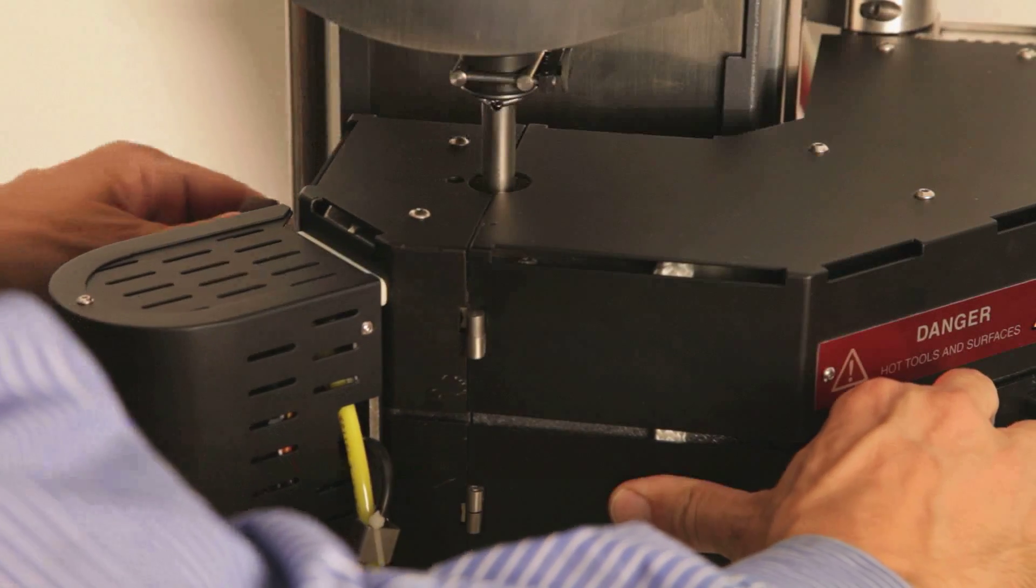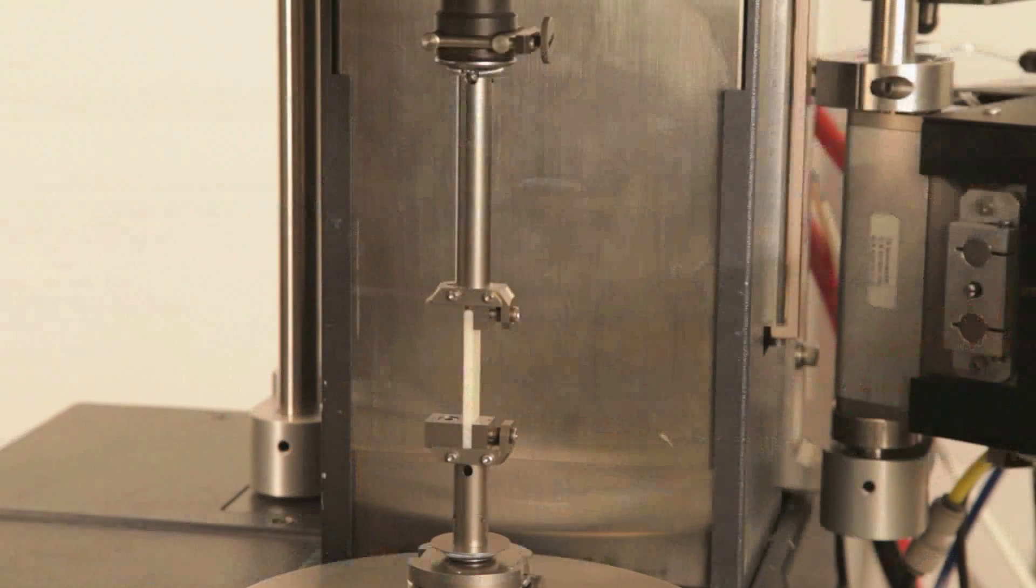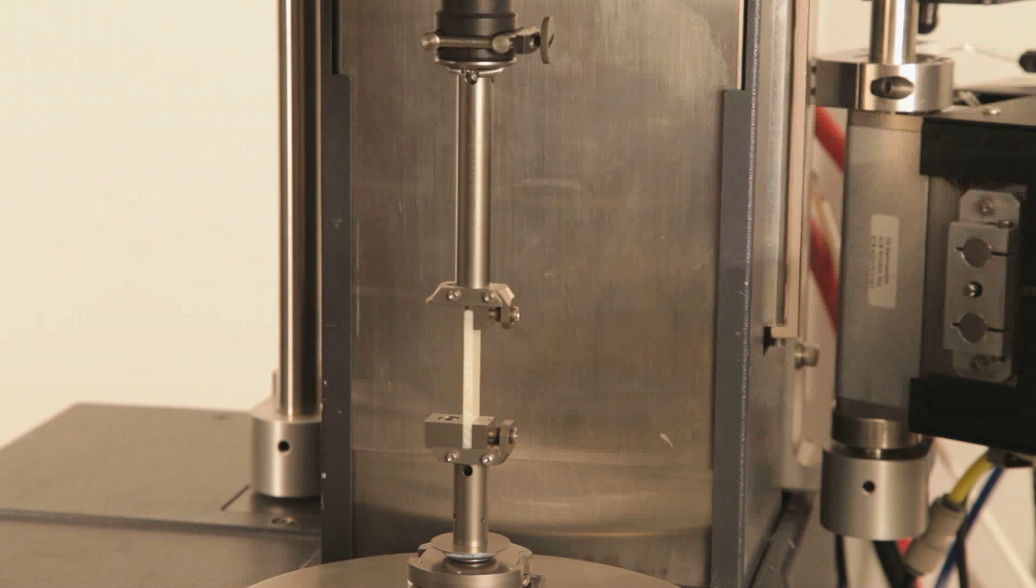The torsion fixture is now installed. The sample is loaded and held under a tension force. You can now proceed with setting up your test procedures and equilibrating the temperature for your polymer application.